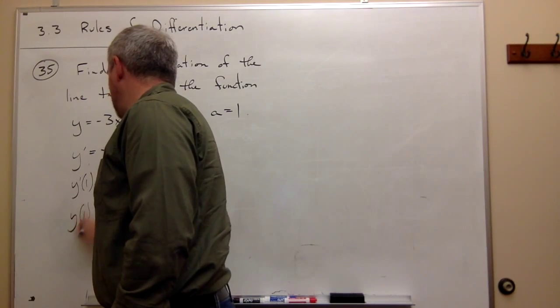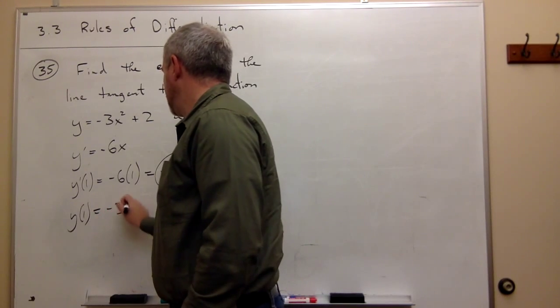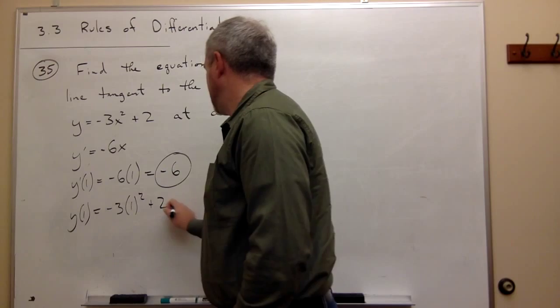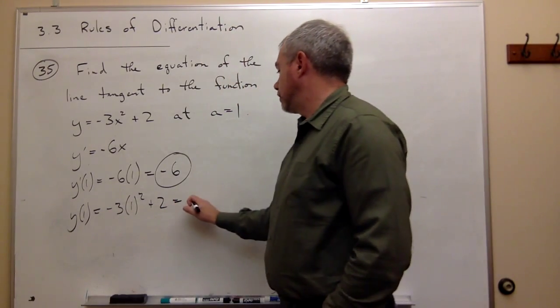If x is 1, plug it into the original function: minus 3 times 1 squared plus 2. In other words, negative 3 times 1 plus 2, which is negative 1.